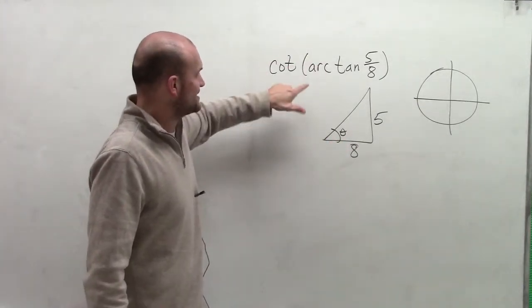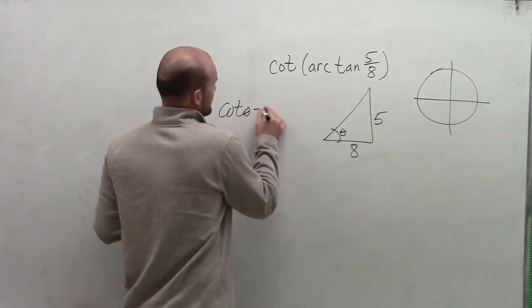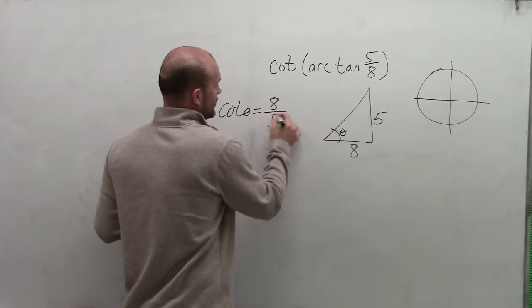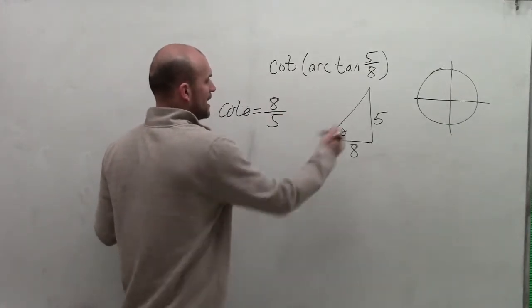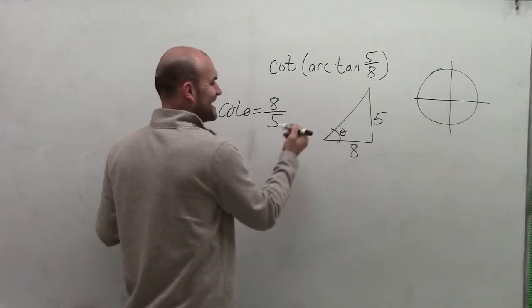Since I'm dealing with cotangent, I can simply say that the cotangent of theta is—remember tangent is opposite over adjacent—so now we're dealing with adjacent over opposite, not hypotenuse.